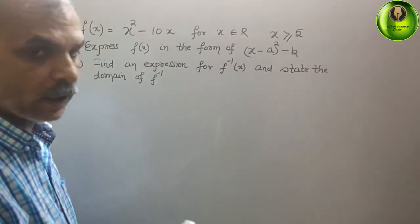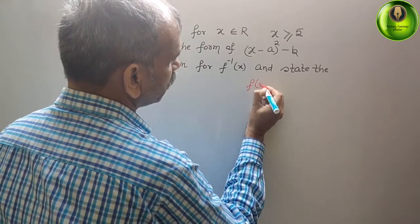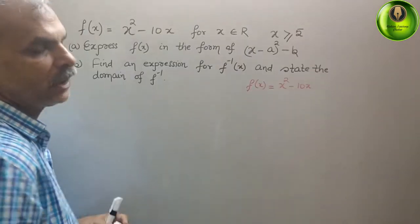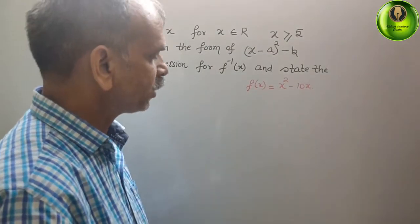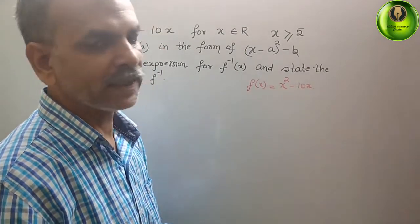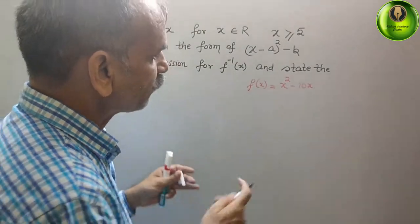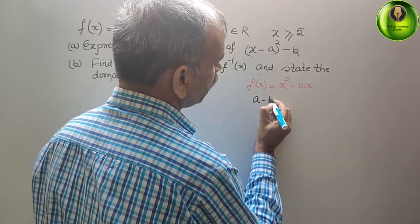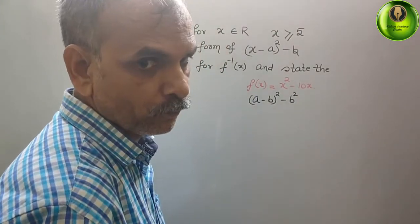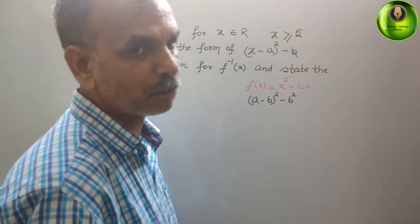What they have given is f(x) = x² minus 10x. You can see here, a common factor is not there. That means we have to make it in the form (a minus b) whole square minus b squared. We will expand that as a squared plus b squared minus 2ab.